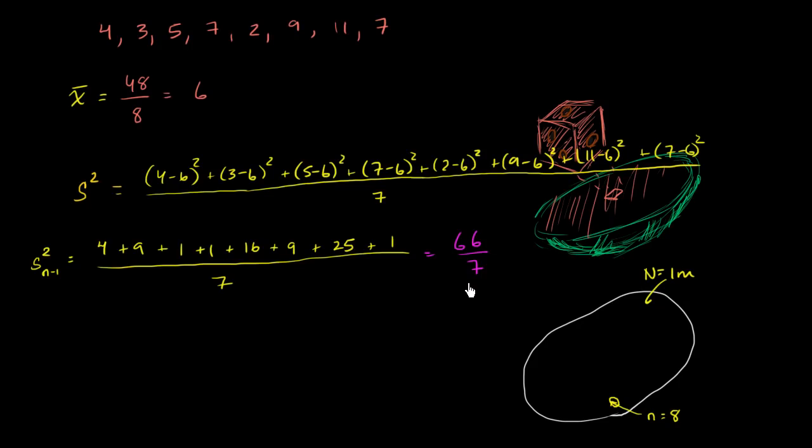And we could either divide, that's 9 and 3 sevenths. We could write that as 9 and 3 sevenths. Or if we want to write that as a decimal, I can just take 66.